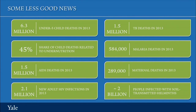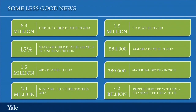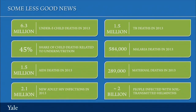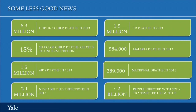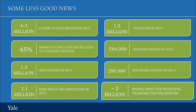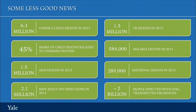Despite the progress against HIV, there are still 1.5 million AIDS deaths in 2013 and more than 2 million new HIV infections every year. There were still 1.5 million TB deaths in 2013, almost 600,000 malaria deaths, almost 300,000 women who die of pregnancy-related causes, and about 2 billion people worldwide infected with soil-transmitted helminths.